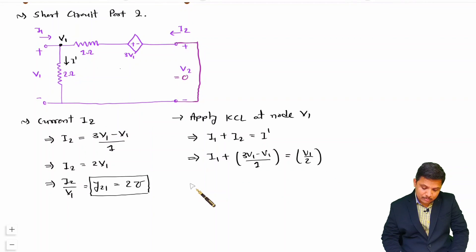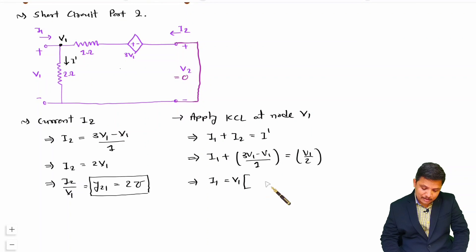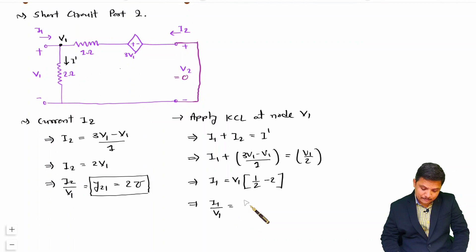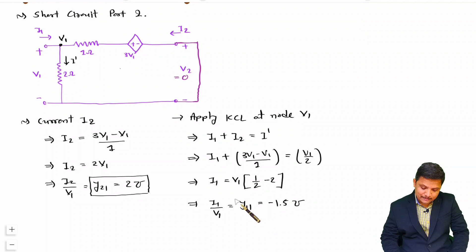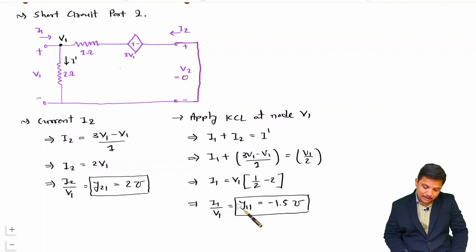Simplifying, we get the relation of i1 and v1. Taking v1 common: i1/v1 = 1/2 − 2 = −1.5 mho. So y11 = −1.5 mho, which is also referred to as the input admittance. That is how we obtain y11 and y21.